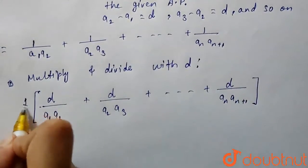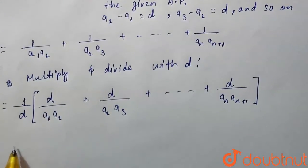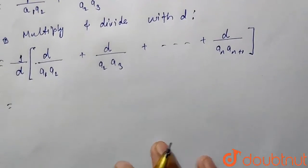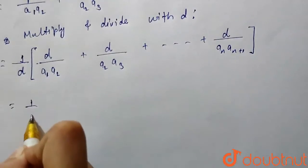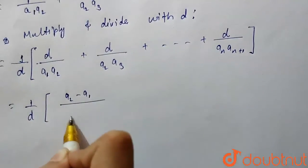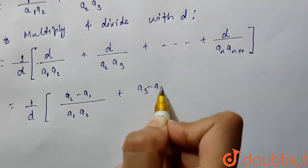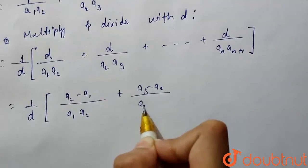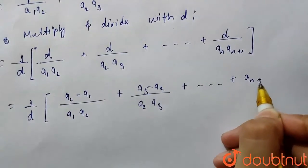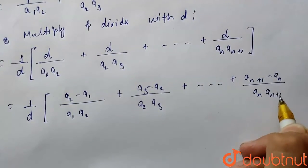1 times 1 by d as we have multiplied and divided with d. So here we can write d as 1 upon d times a2 minus a1 upon a1a2 plus a3 minus a2 upon a2a3 plus an plus 1 minus an upon anan plus 1.